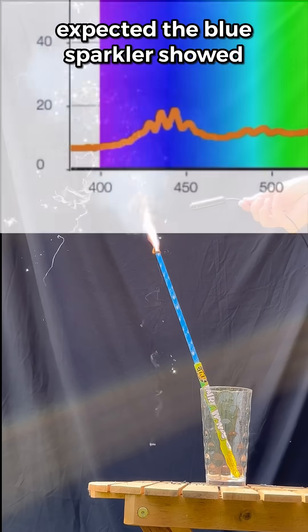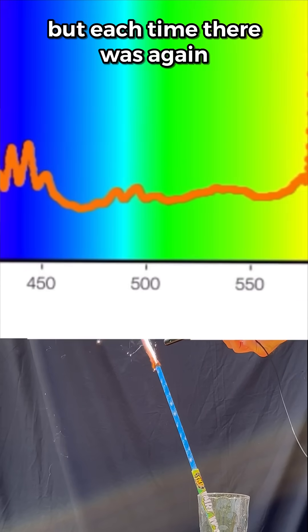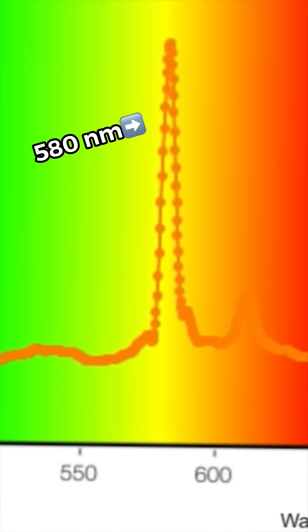As expected, the blue sparkler showed evidence of copper emission, and the green sparkler likely contained barium. But each time, there it was again, that 580 nanometer line. I was stumped.